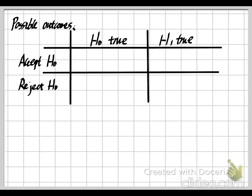So what will happen if, in fact, the null hypothesis H0 is correct and our conclusion is we accept it? This means we make a correct conclusion — that is what we want. And the other case: if our null hypothesis H0 is not correct, then because H1 contradicts our null hypothesis, if H1 is correct, we should reject H0 because it's wrong. So when H1 is true and our conclusion is to reject H0, everything is good.